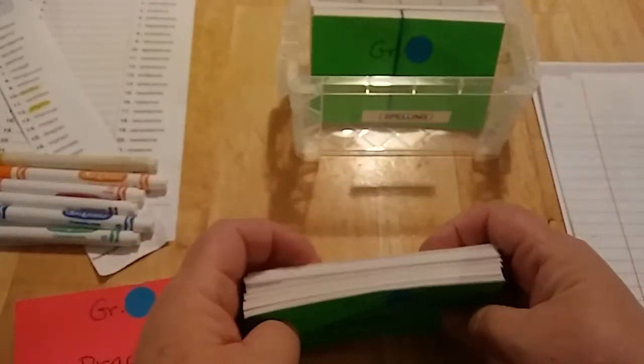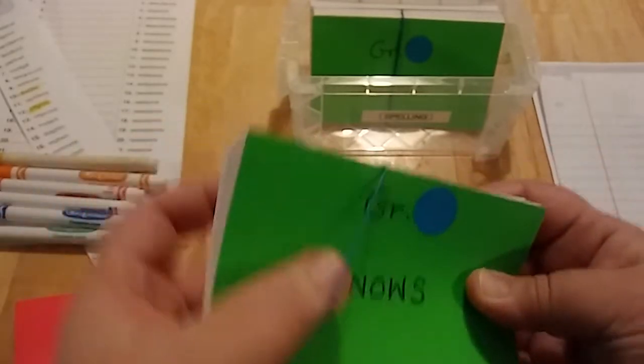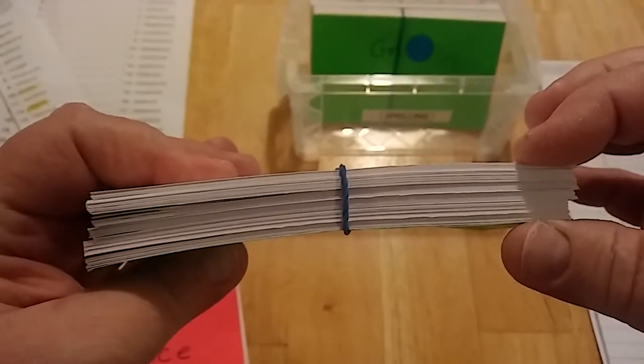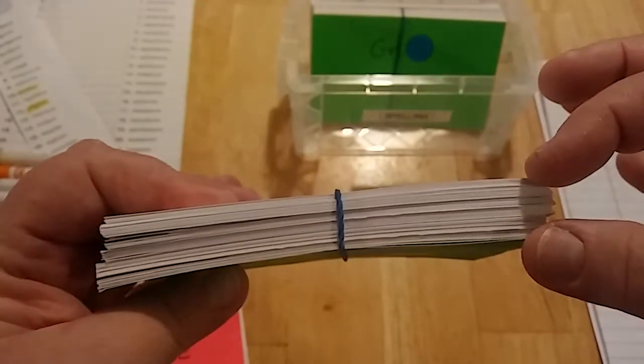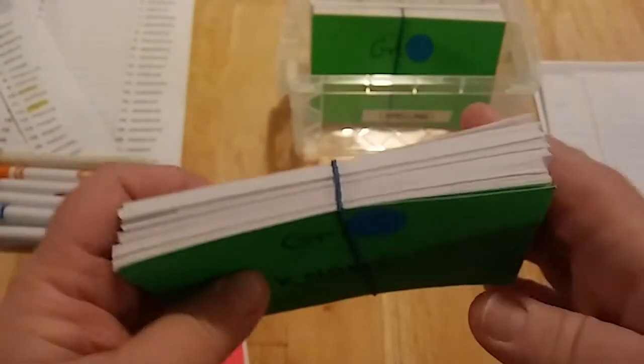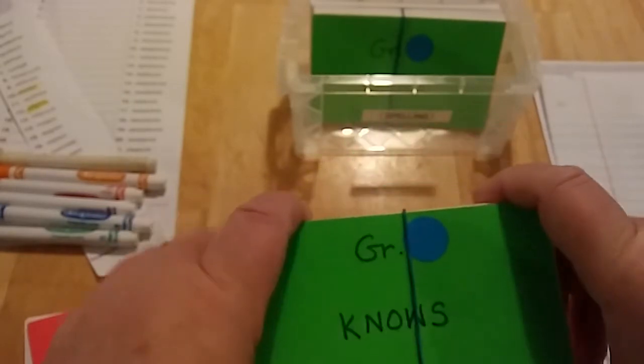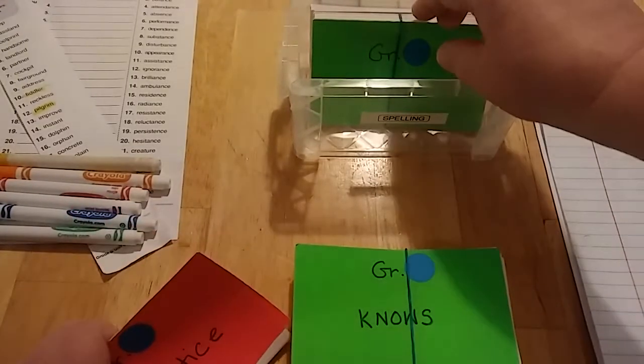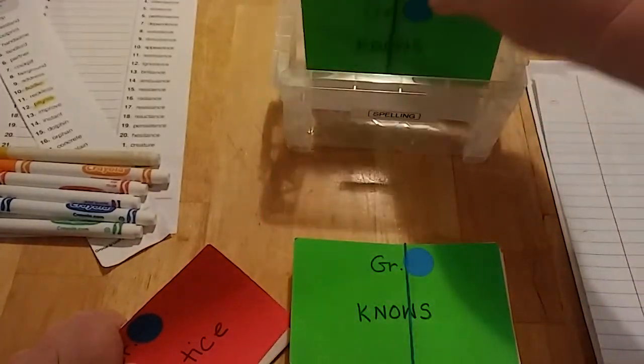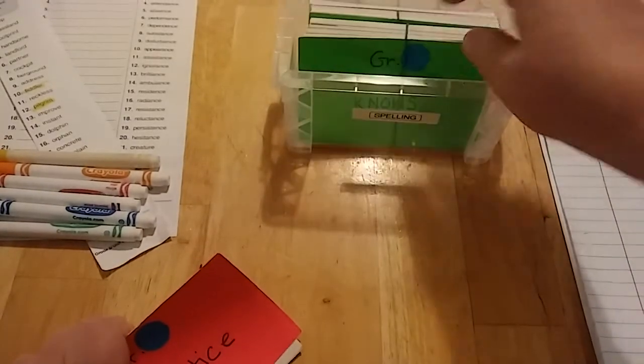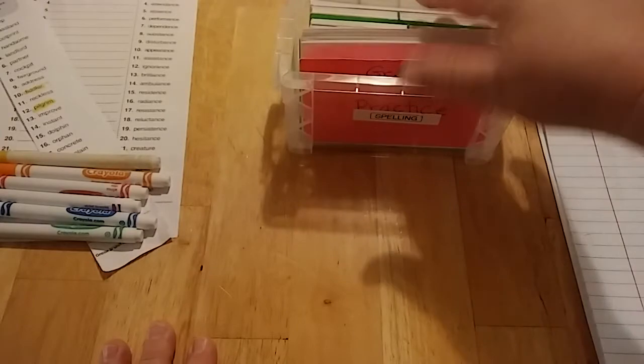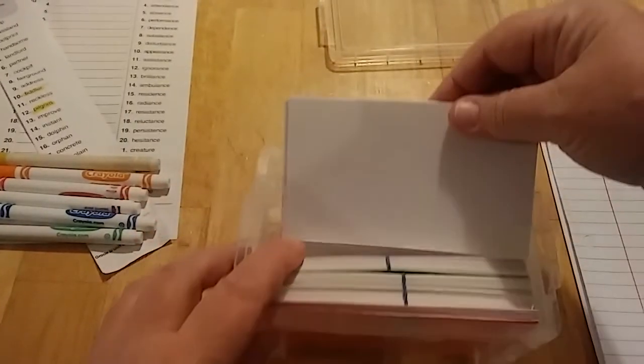This is a good way of visualizing how many words she has accomplished. This also can be used for review. You can go back through these from time to time and see if she still knows them. Then what happens is this is a previous grade and this is the current grade and then this is the practice. I also keep blank cards in the back.